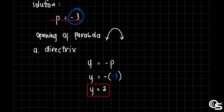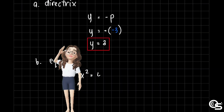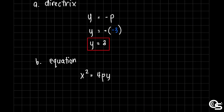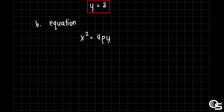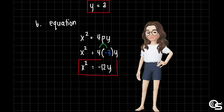Next, let's go to the equation. From the summary table, the standard form is x squared equals 4py. We substitute p equals negative 3, giving us x squared equals 4 times negative 3 times y, which simplifies to x squared equals negative 12y. This is the standard form of the given parabola.